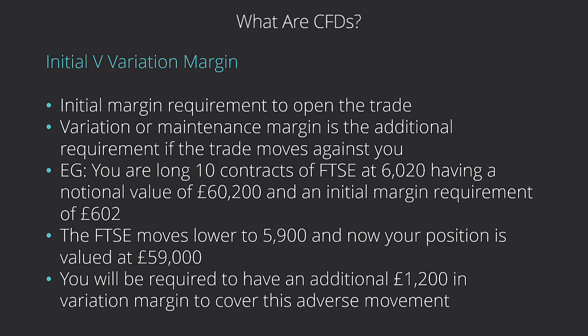Variation margin, or maintenance margin depending on your terminology, is the additional requirement you need to put up if the trade moves against you. For example, you're long 10 contracts of the FTSE at 6,020, and that's got a notional value of £60,200 and an initial margin requirement of £602, which is your 1%.